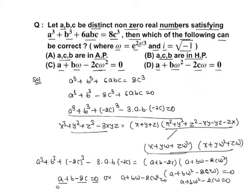From the factored form, either a + b - 2c = 0, or a + bω - 2cω² = 0, or a + bω² - 2cω = 0. From a + b - 2c = 0, we get a + b = 2c, meaning a, c, b are in AP — so option A is correct. Option B (HP) is wrong. Option C (a + bω - 2cω² = 0) is correct. Option D (a + bω² - 2cω = 0) is correct. Therefore options A, C, D are correct.